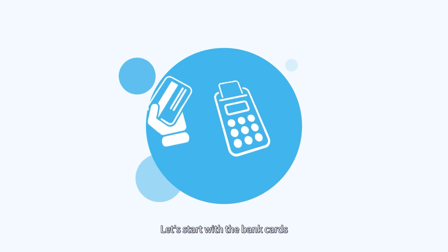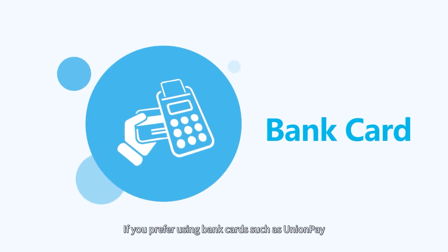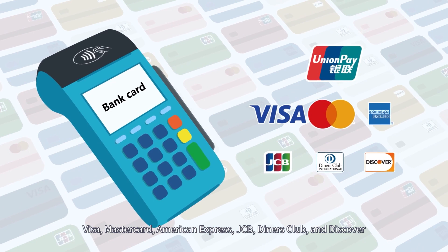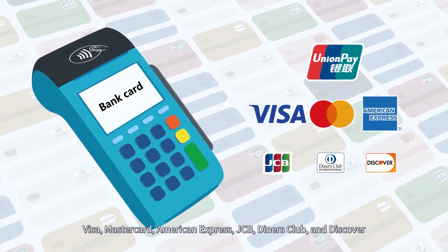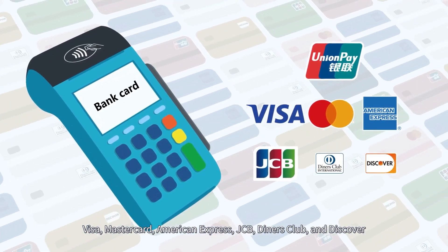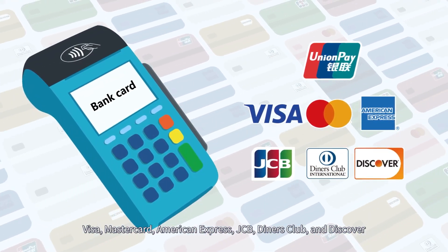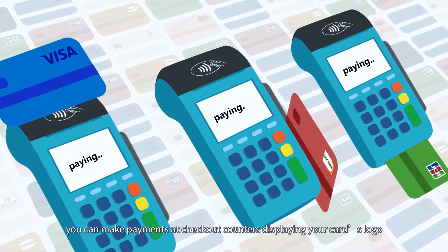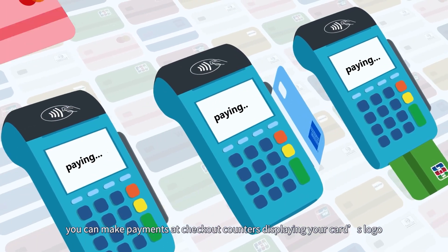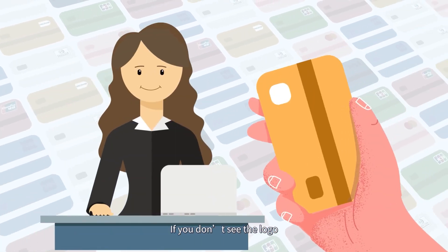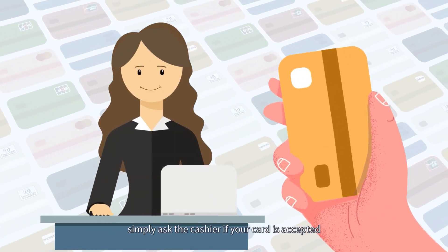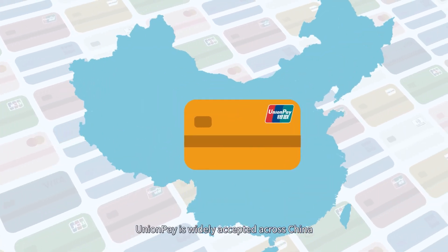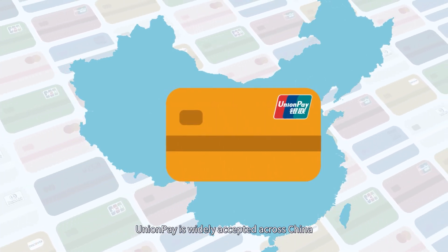Let's start with the bank cards. If you prefer using bank cards such as UnionPay, Visa, MasterCard, American Express, JCB, Diner's Club, and Discover, you can make payments at checkout counters displaying your card's logo. If you don't see the logo, simply ask the cashier if your card is accepted. UnionPay is widely accepted across China.